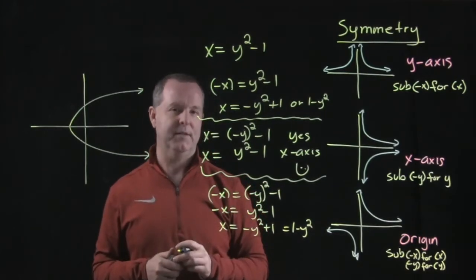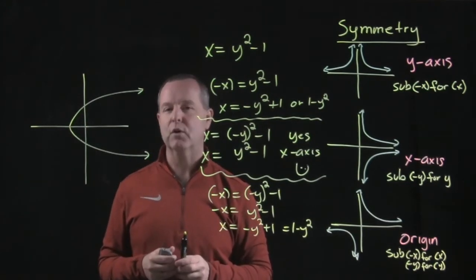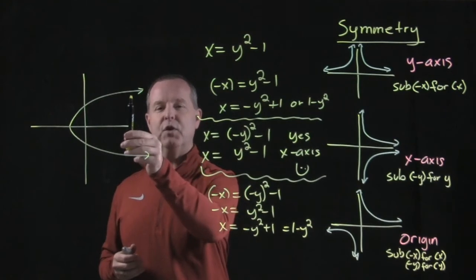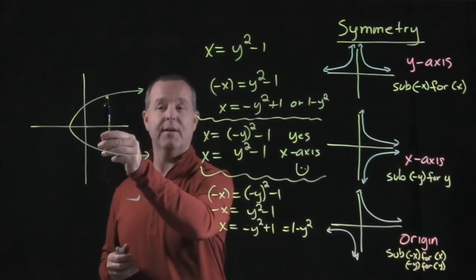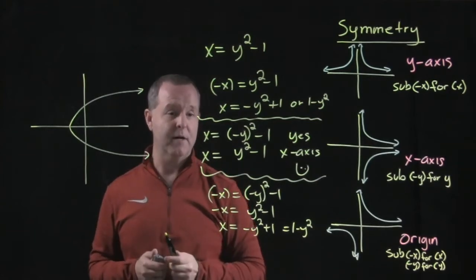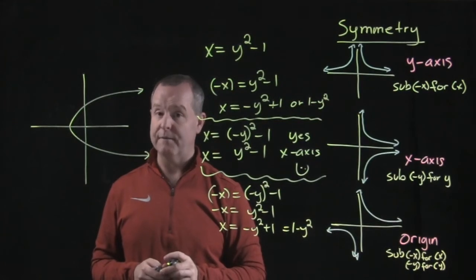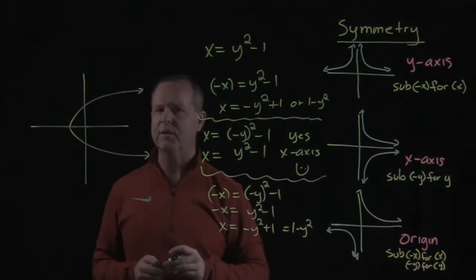Now what else do you notice about this graph? Do you notice it also is not a function? It doesn't pass the vertical line test. There's two places where my pin intersects the graph. So it does not show that it's a function. So typically, graphs that are symmetrical about the x-axis are not functions.